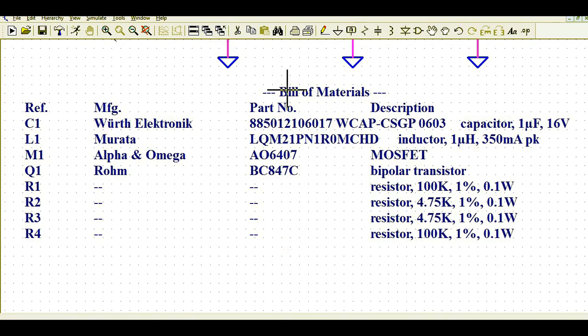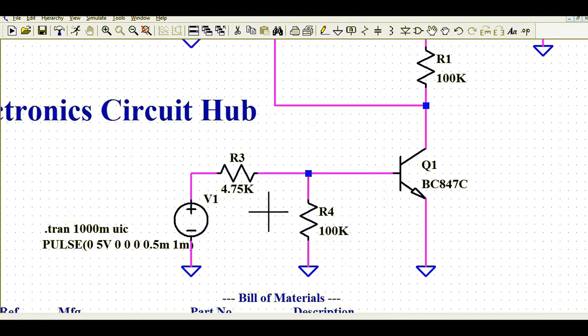You can see the bill of materials are generated. You can see the different values: C1 manufacturer part number and description, L1, M1 MOSFET, Q1 transistor, and R1, R2, R3, R4. These are the generic components showing the resistor value, tolerance, and the power dissipation.